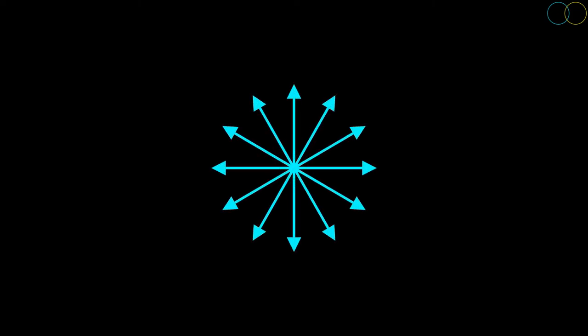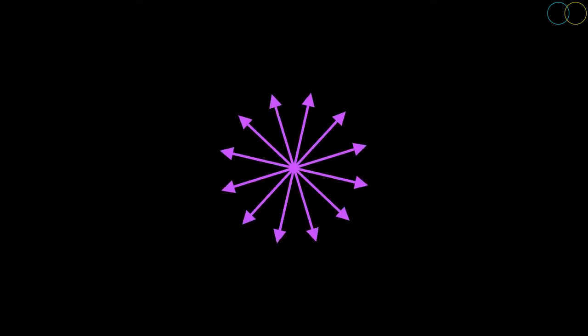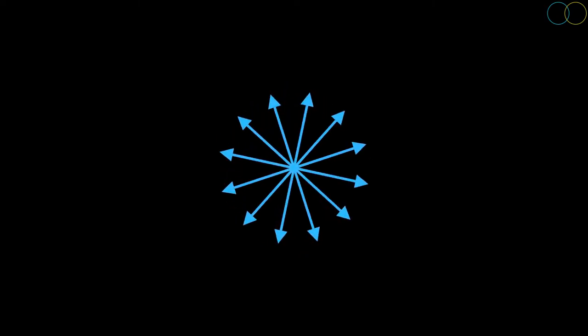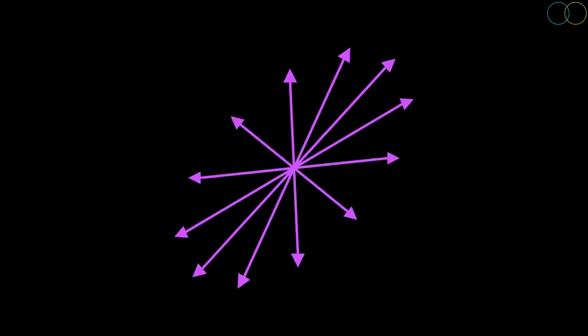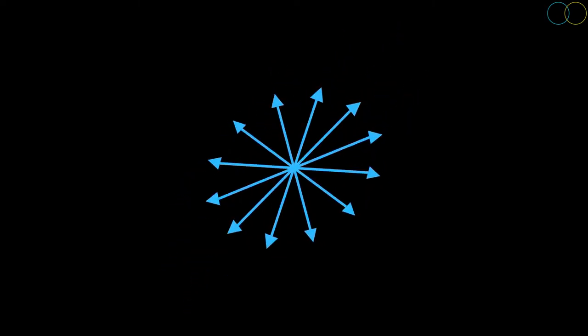A good way to visualize linear transformations in two dimensions is to start with vectors stemming outwards from the origin in a circle. Applying the linear transformation to the vectors gives a nice overview of its effect on the vector space.